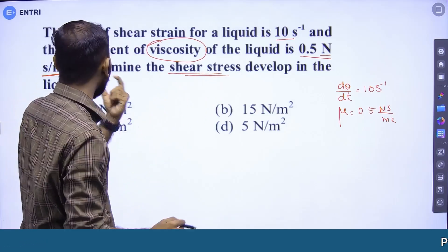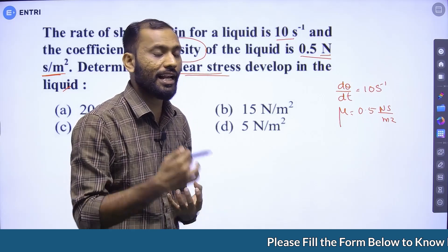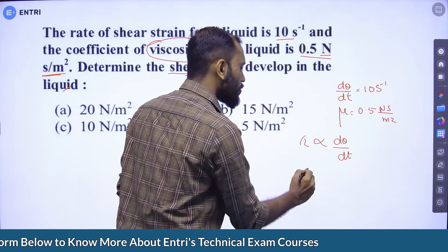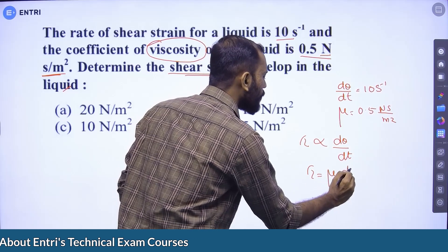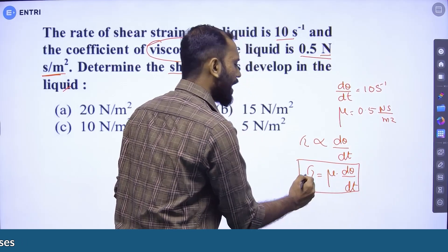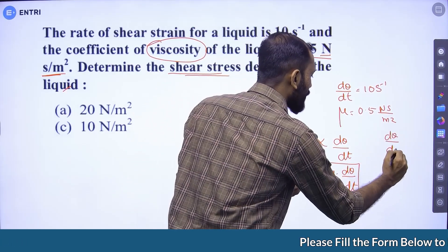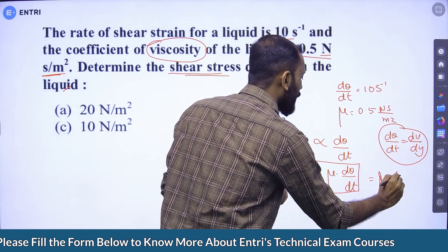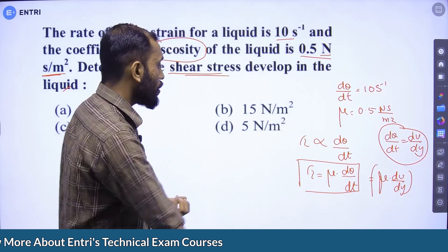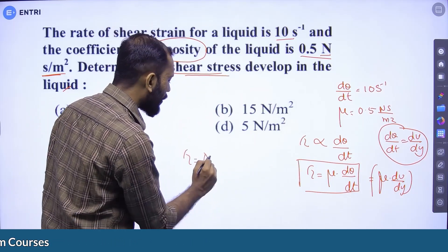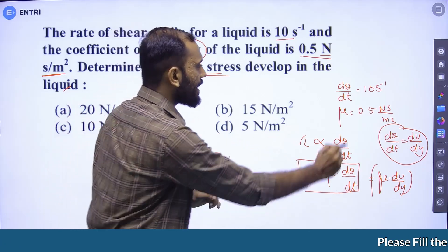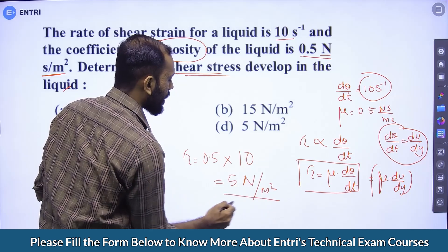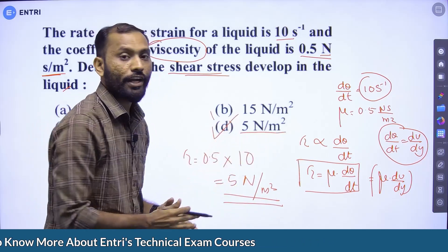Using Newton's law of viscosity, the rate of shear stress is given by tau equals mu into du by dy, or equivalently, tau equals mu into d-theta by dt. Substituting: tau equals 0.5 into 10, which gives 5 Newton per meter square. Option D is the correct answer: 5 Newton per meter square.